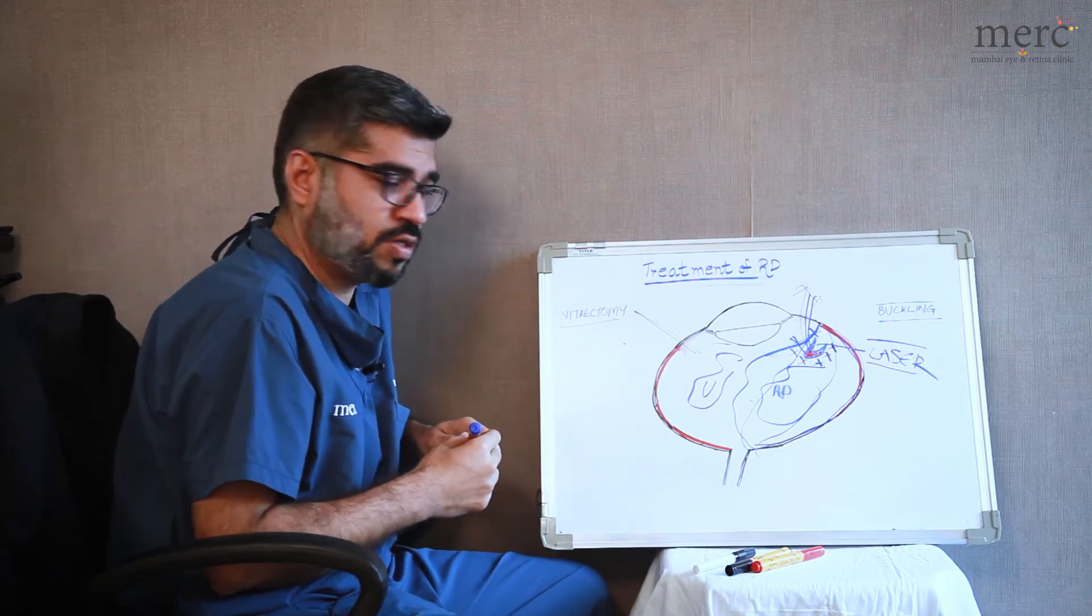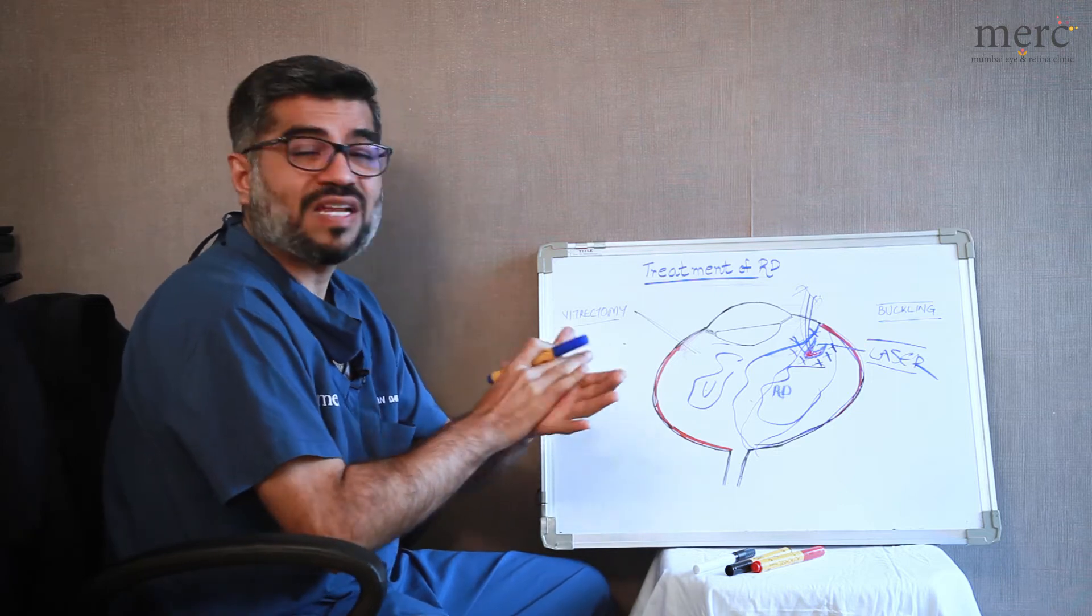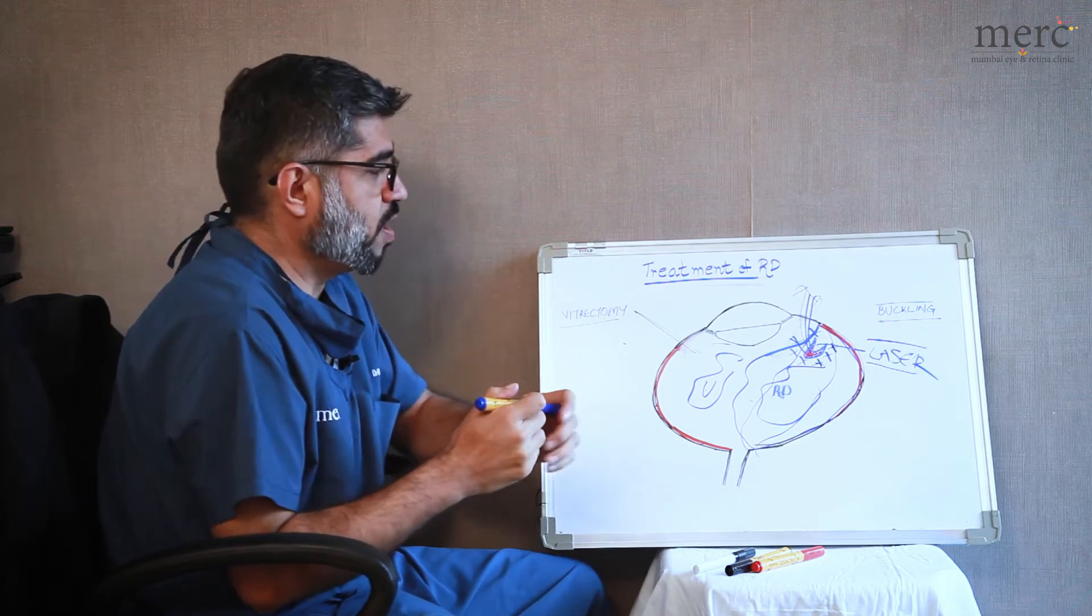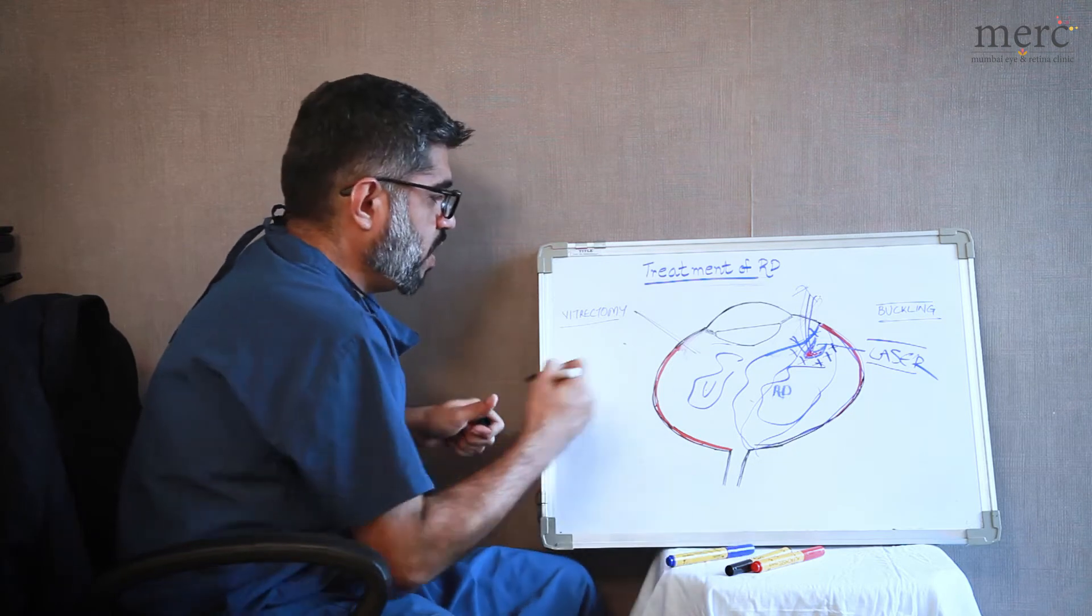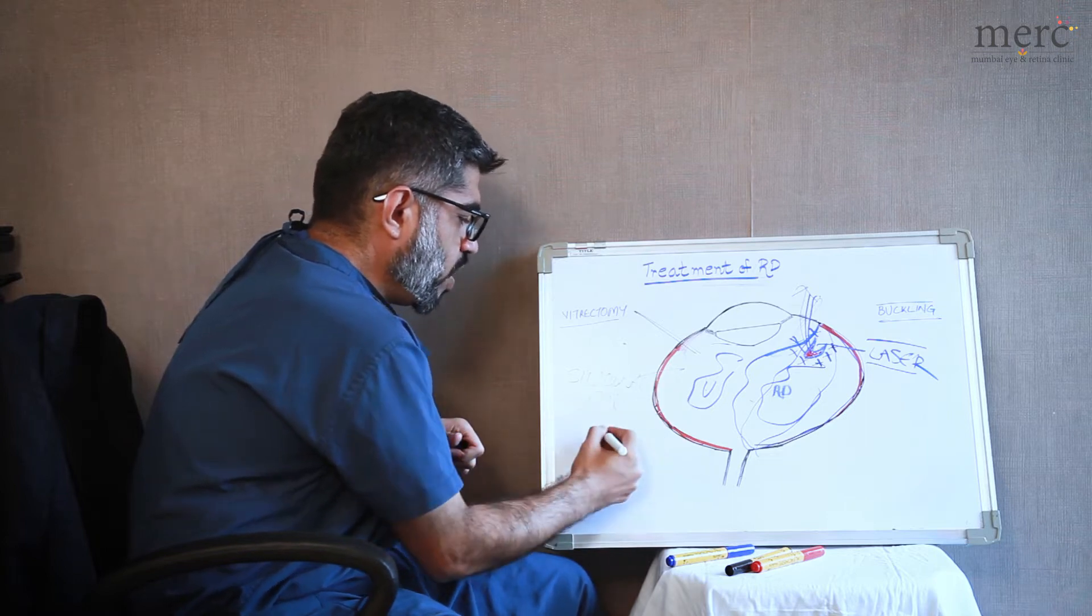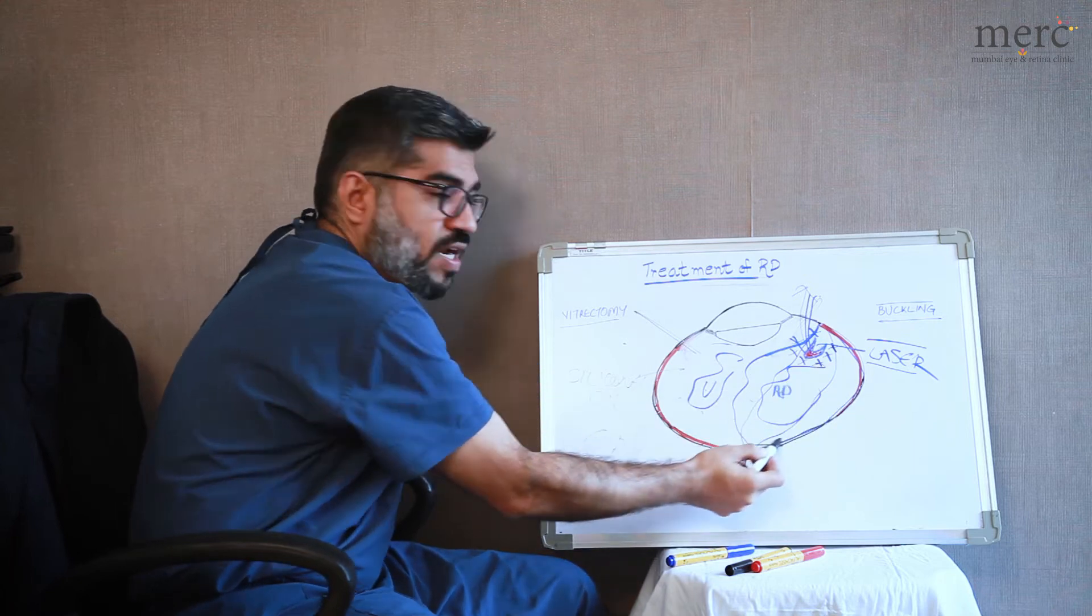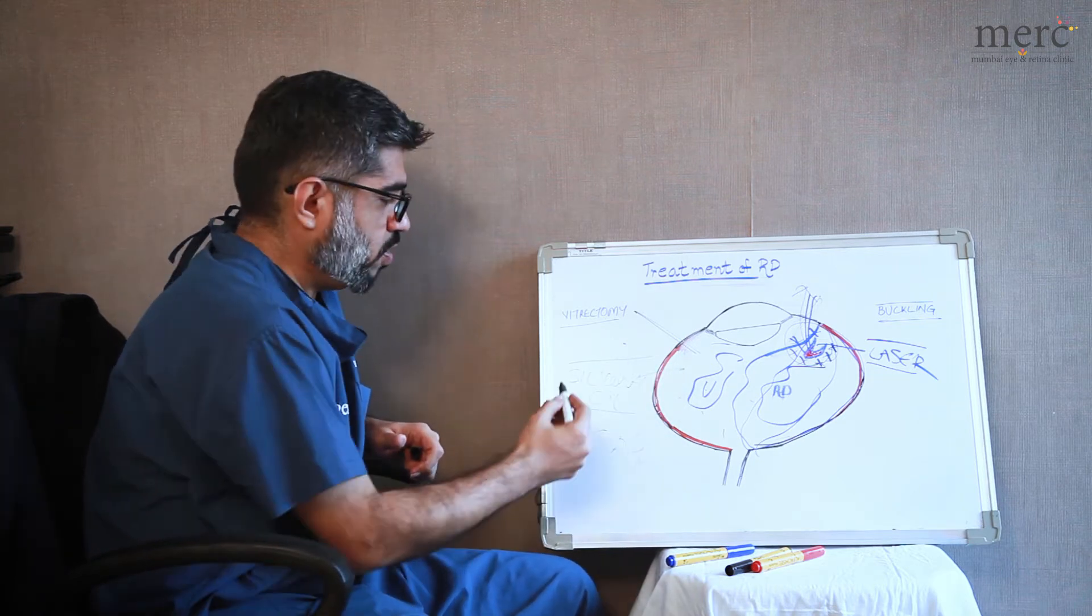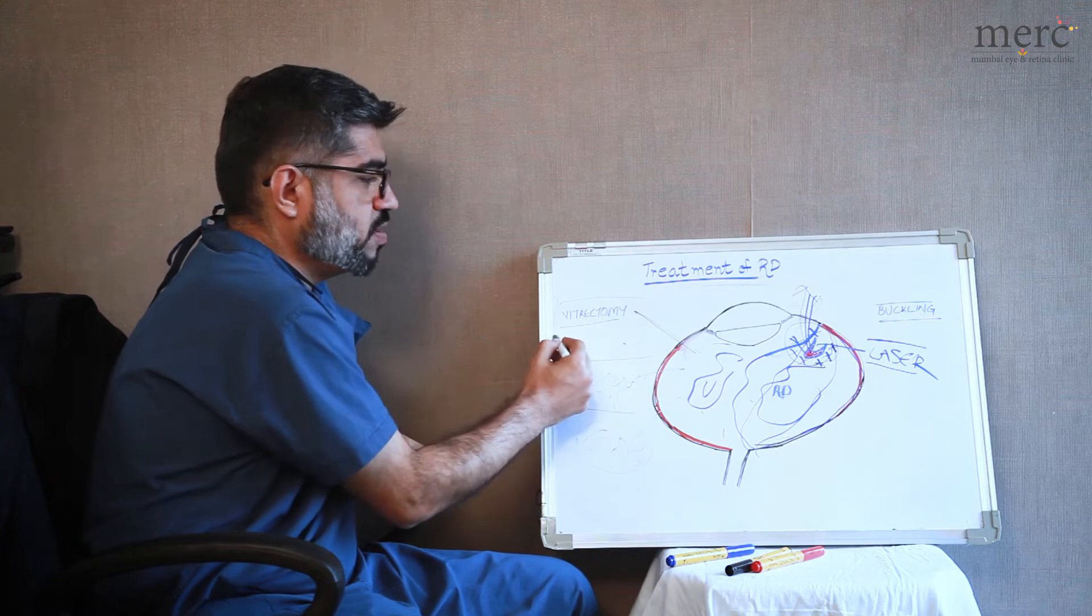The final step of a vitreous surgery would be to support the retina. Now it's common to understand that when we want to stick two things together we just apply glue and we put pressure onto the two things so that they can stick to one another. In the same manner to keep the retina attached in its normal position either we use a substance which is called silicone oil or it can be done with the help of gas. So it has four steps: removal of the gel, putting the retina back in its normal position, sealing the retinal tear, and finally supporting the retina for some time with the help of silicone oil or gas. These are the steps in a vitreous surgery.